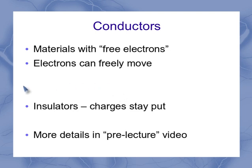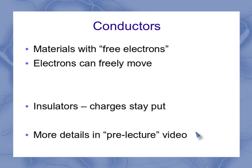In contrast to conductors are the materials we've been dealing with: insulators. When I've got an insulator, if I put a charge on a surface it stays right where I put it, or if I'm putting charges in a volume I can distribute them evenly through the volume and they're going to stay exactly where I put them. So in conductors the electrons are able to move, and in insulators they're going to stay put. The pre-lecture video also explains another material called semiconductors, which we'll work with later this semester.